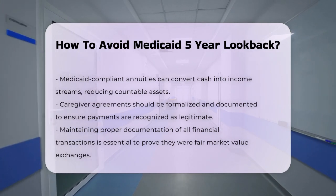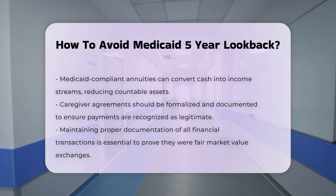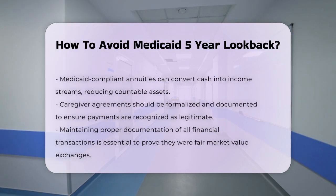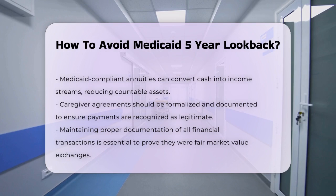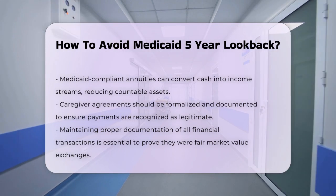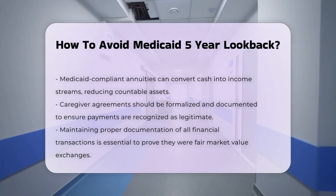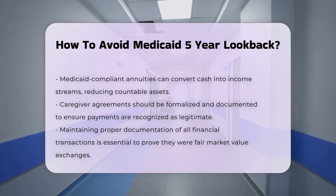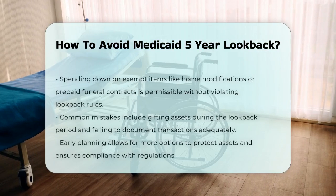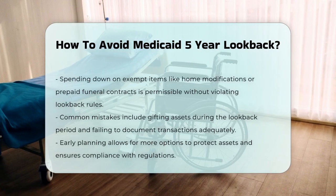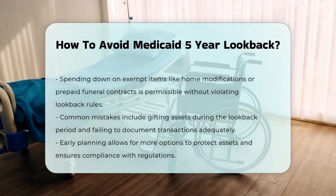Fifth, maintain proper documentation. Keep detailed records of all financial transactions, including payments, sales, and transfers. This documentation can prove that transactions were made at fair market value and were not gifts. Additionally, you can spend down your assets on exempt items such as home modifications, prepaid funeral contracts, or paying off personal debt like mortgages or HELOCs without violating the look-back rules.